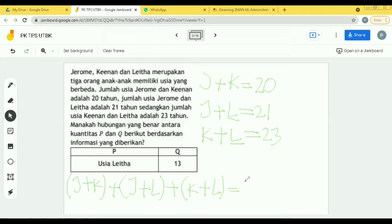Tadi yang pertama berapa J plus K? 20. Oke, 20 ditambah 21 ditambah 23. Sampai sini ada yang bingung nggak? Bisa kita lanjut? Bisa Pak. Oke.